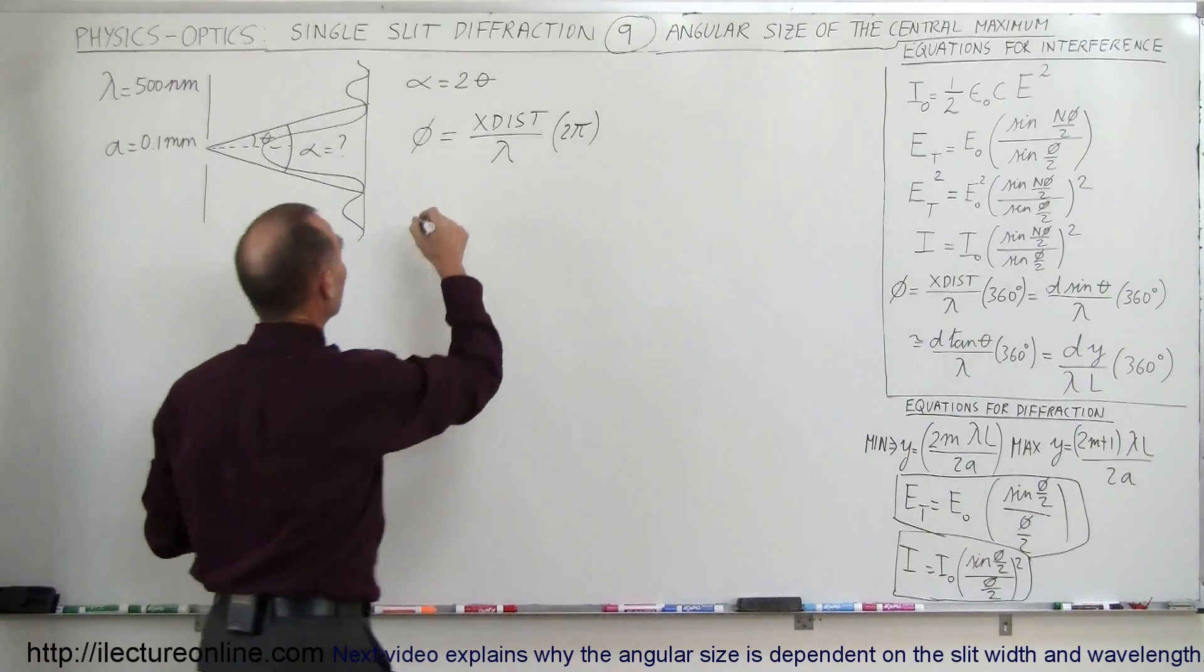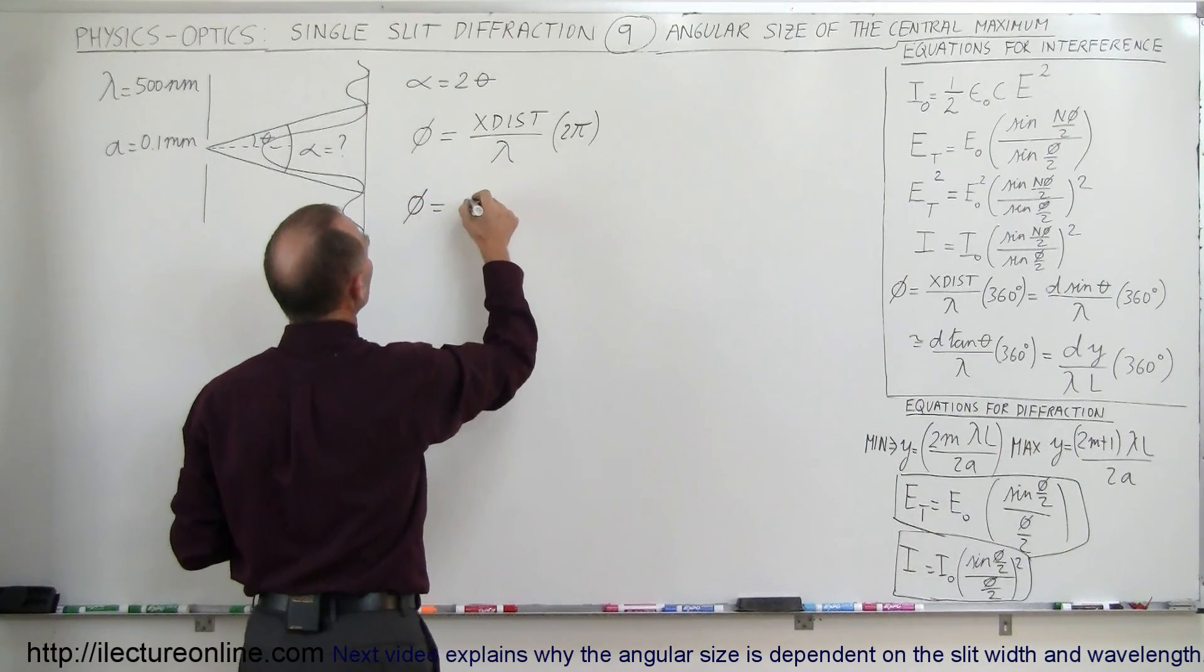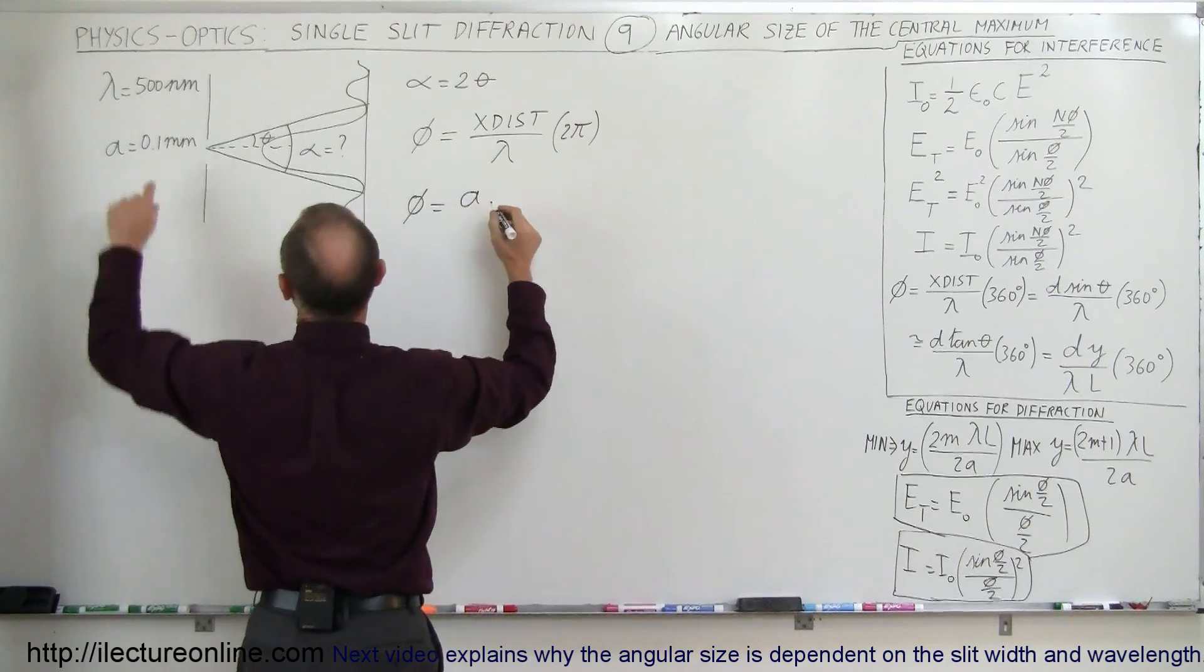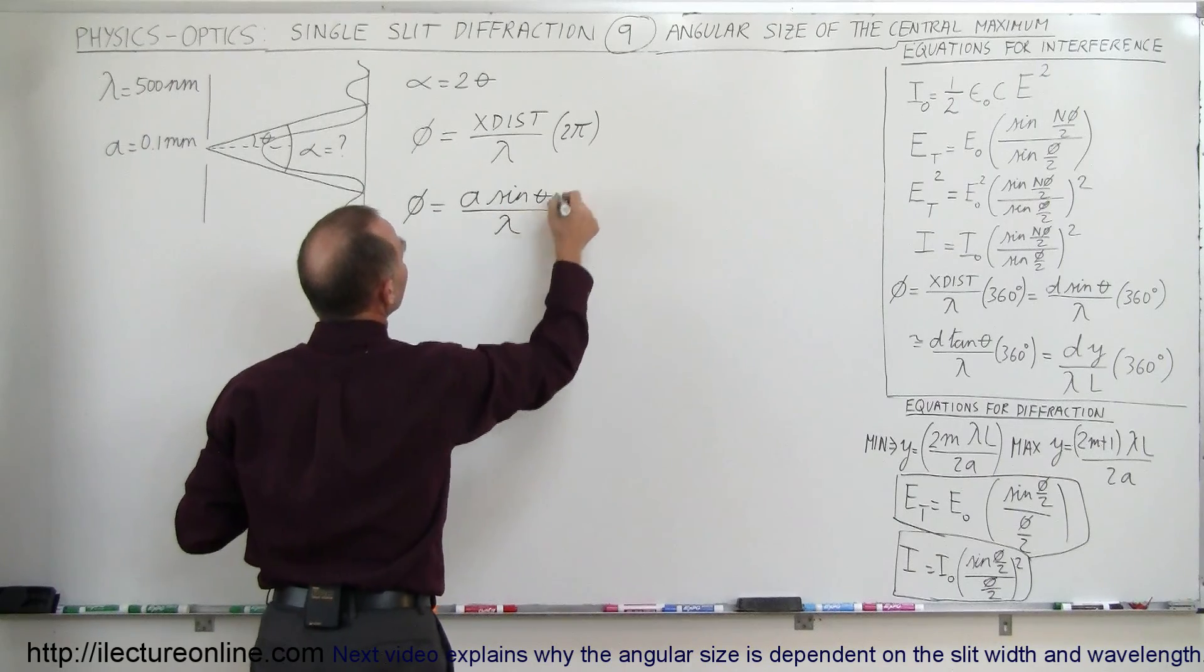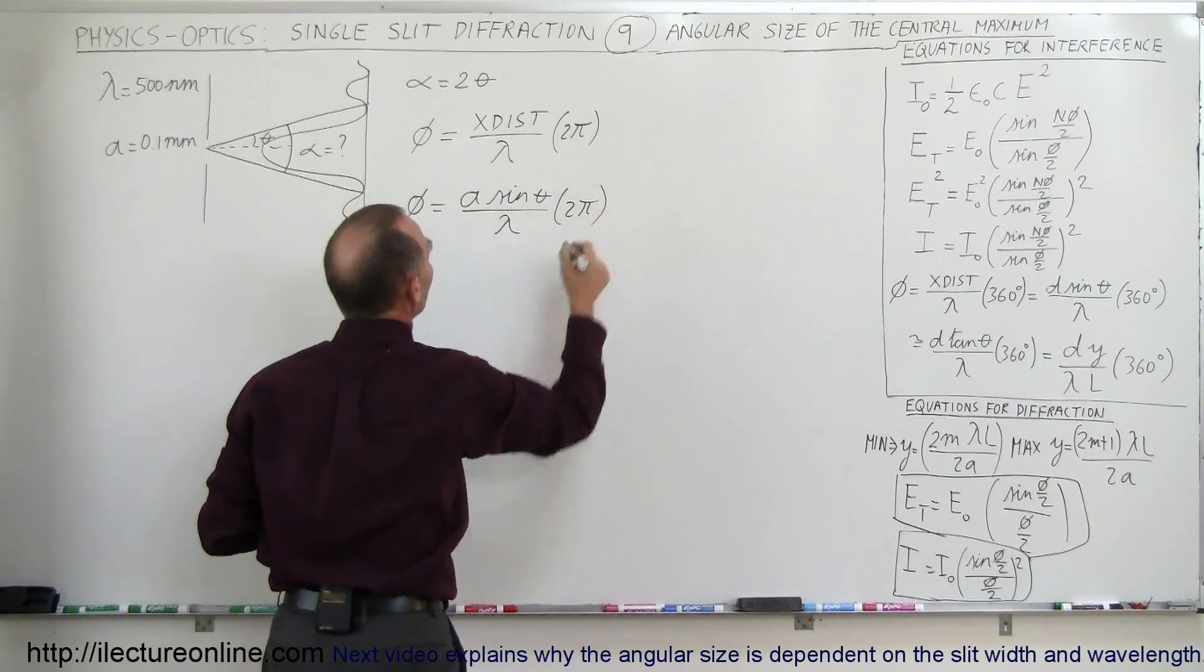The extra distance traveled, phi, is equal to a, the slit width a, times the sine of the lookup angle, divided by lambda, times 2 pi.